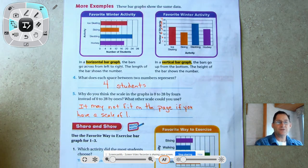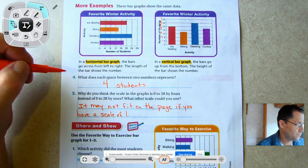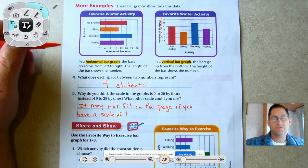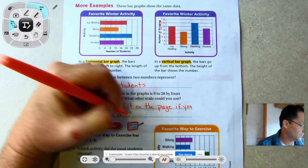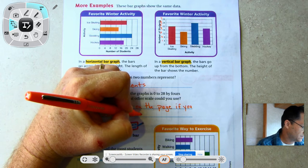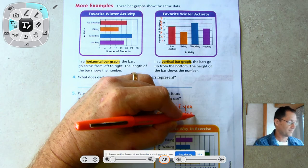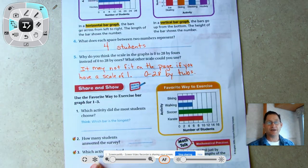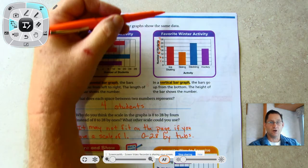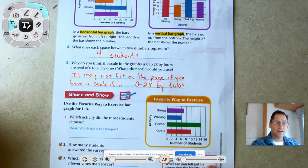What other scale could we use? Well, 28 is an even number so we know two will work. You can go 2, 4, 6, 8, 10, 12, 14, 16, 18, 20, 22, 24, 26, 28. Zero to 28 by twos - that's still not the greatest choice because that's still going to be twice as long as my current bar graph. So four does make the most sense.